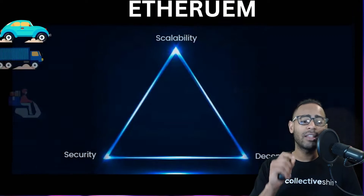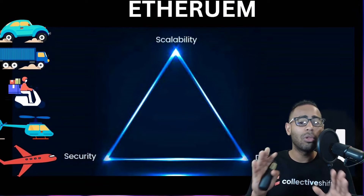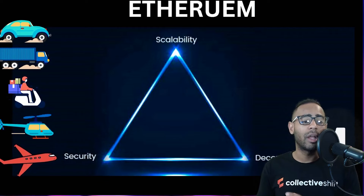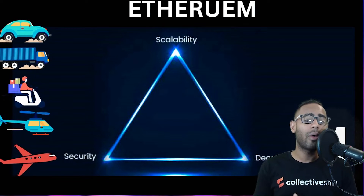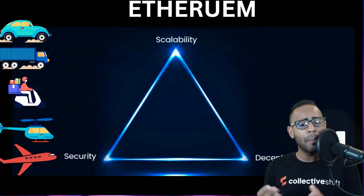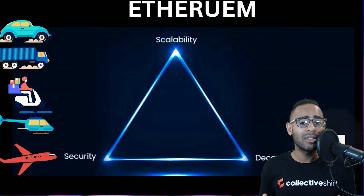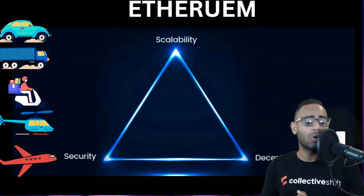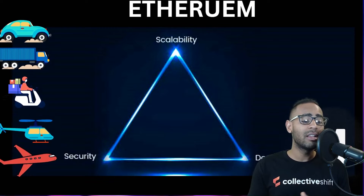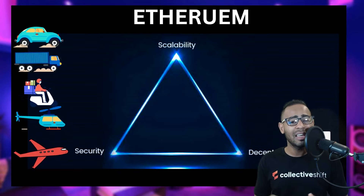Before you get to understand that, you have to know that Ethereum has a scaling trilemma — this is called the trilemma in all of crypto, and every other blockchain has to experience it. Basically, in one corner you have the scalability issue, in another you have the decentralization issue, and on the other side you have the security issue. The trilemma explains that you have to decrease one of these points to increase another. To increase decentralization, you sometimes have to sacrifice scalability. If you want to increase security, you might have to decrease decentralization or scalability. This is the blockchain trilemma.